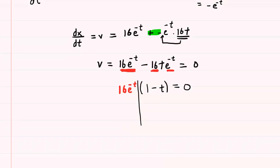To continue solving for t, you have to set each factor equal to zero. So you would have 16e to the negative t equals zero and one minus t equals zero. The equation on the right hand side is easy to solve. We can add t to both sides and we see that t would equal one second.